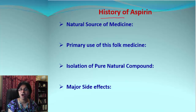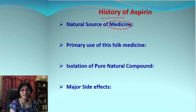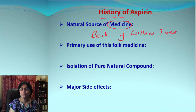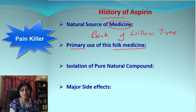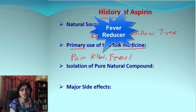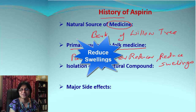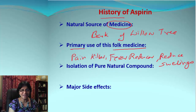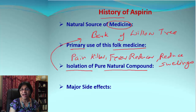The history of aspirin goes a long time ago and the natural source of this medicine from which it originated was very simple. Do you know what it is? It is the bark of the willow tree. It is a natural resource and then we decided to extract it and got the medicine we are using. The primary use of this folk medicine was as a painkiller, a fever reducer, and for reducing swellings. We then isolated the pure natural compound from the bark of the willow tree, and the chemical compound we got was salicylic acid.